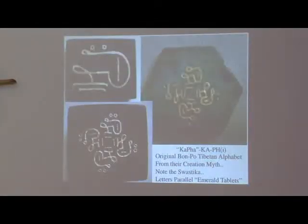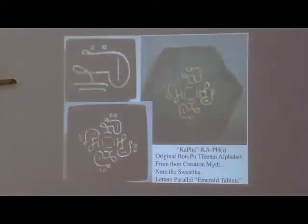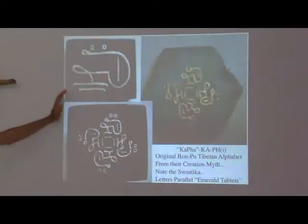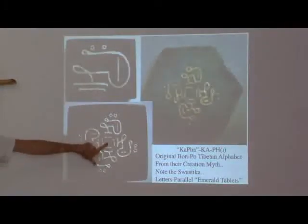We have just a few more slides in this series. This is the Emerald Tablets of Hermes. You see the caduceus? And this is a derivative root called Banpo — the Kapha tablet of the original Banpo Tibetan. And if you look here, the shaman is seeing the plasma residue enter the tornado, and that is called a swastika.